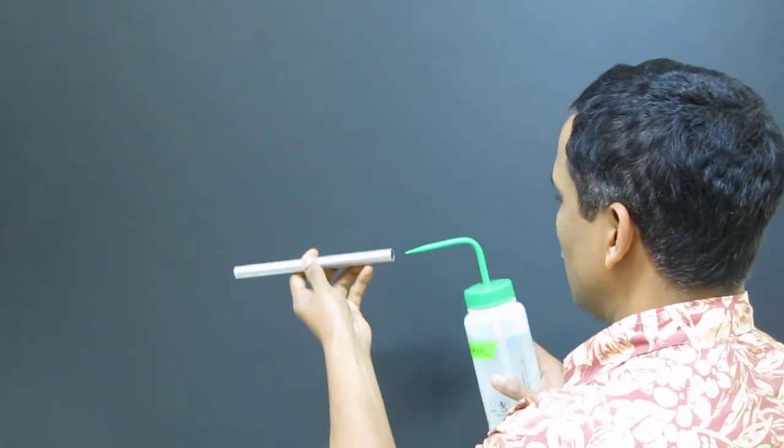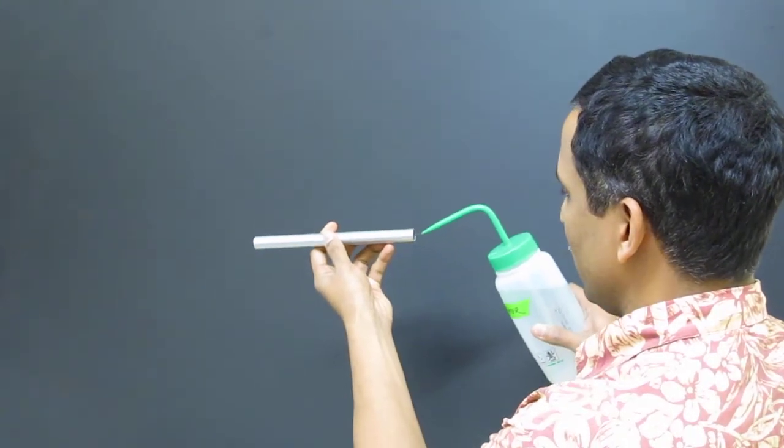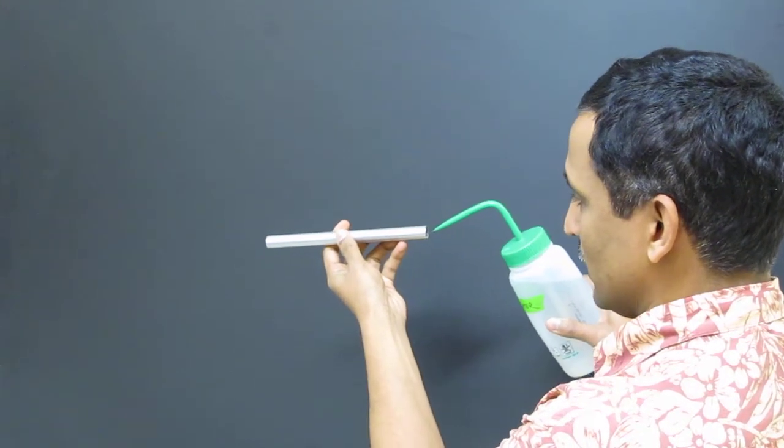So first we will try to flow water through a regular aluminum pipe. As you can see, this is a regular aluminum pipe. I'm trying to push water from one end and then see how the water comes through the other end.